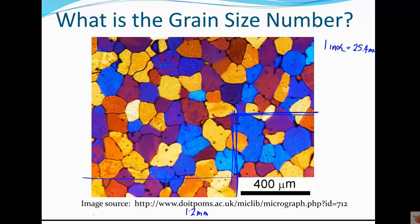Counting the grains in that region, I count approximately 19 grains — some are obscured by the title. If we were doing this seriously, we would do this many times and obtain an average and a standard deviation. So we have 19 grains.